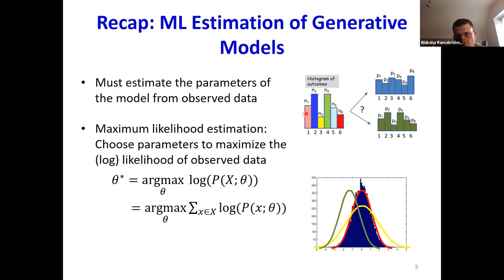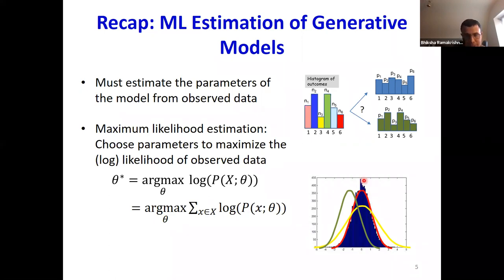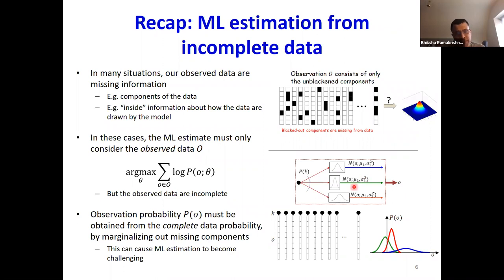We encode this using the maximum likelihood principle, where we compute the probability of the training data given by the model and try to estimate the parameters to maximize this probability — or equivalently, to maximize the log probability. If your training data comprises independently drawn samples, this is simply the sum over all samples of the log probability assigned to individual samples. So you expect to find a multinomial distribution which mimics the histogram of observed data, or if modeling continuous data with a Gaussian, you expect Gaussian parameters such that the Gaussian mimics the histogram shape.